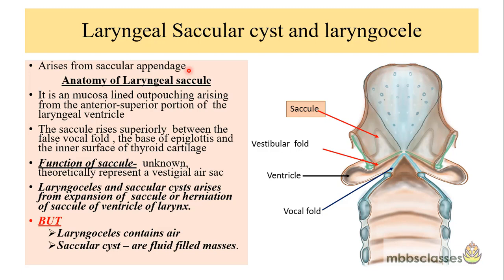Before we come to the disease proper, let us refresh the anatomy of the laryngeal saccule. This is the coronal section of the larynx. The saccule is a mucosa-lined outpouching which arises from the anterosuperior portion of the laryngeal ventricle. The vestibular fold is the false vocal cord, and the true vocal folds are below it; the space between is the ventricle. The saccule extends superiorly between the base of the epiglottis, the false vocal cord, and the thyroid cartilage, and is surrounded by scanty muscles.